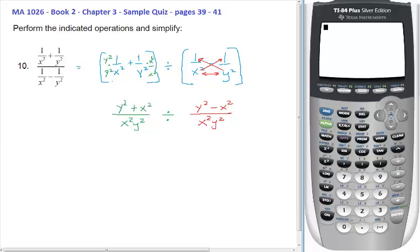Now, next, of course, when you divide by a fraction, it's the same as multiplying by the reciprocal, so x squared y squared times, now take the reciprocal of this side, x squared y squared over y squared minus x squared.